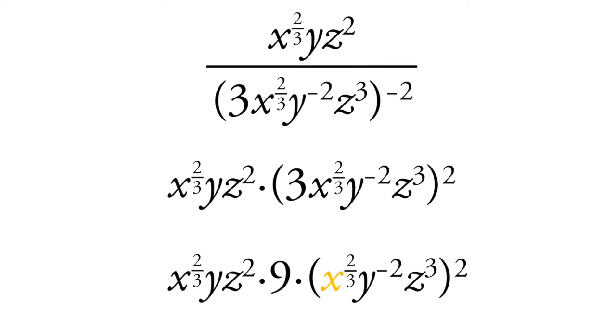And the x to the 2 thirds, once we square it, we're going to take this 2 and multiply it by 2 thirds, and we get x to the 4 thirds.